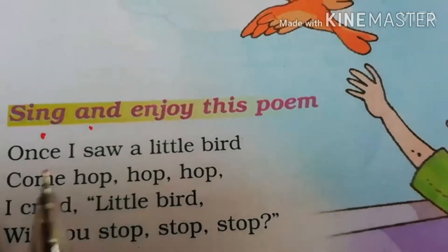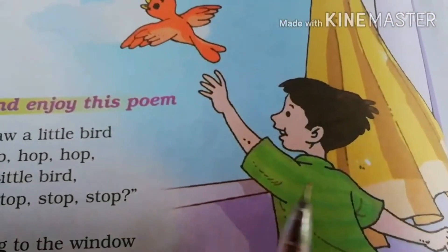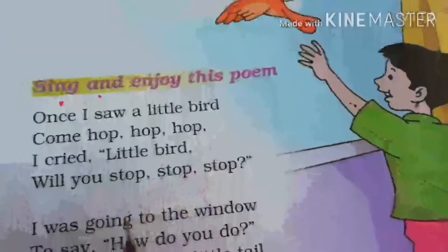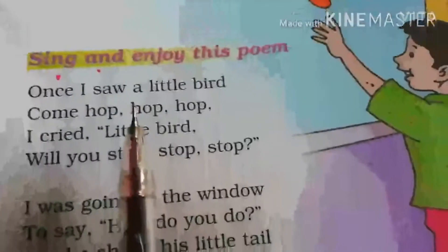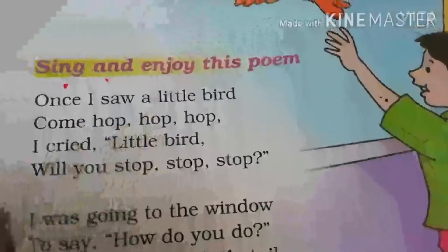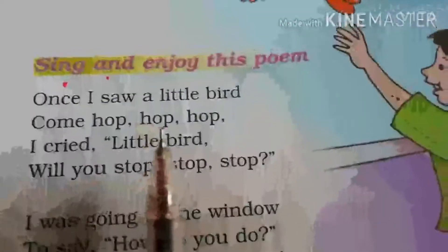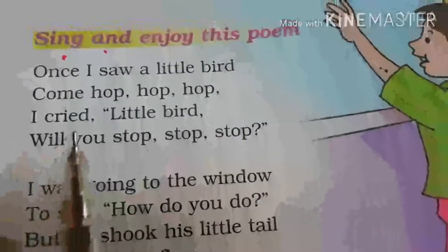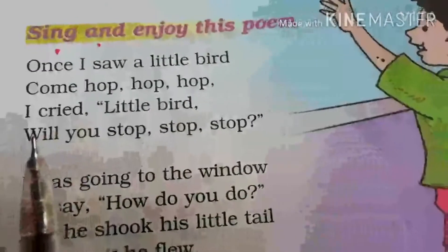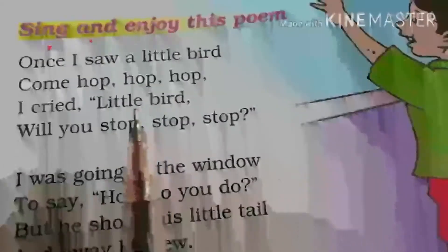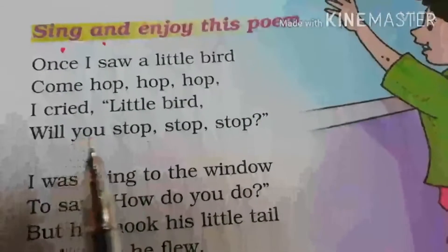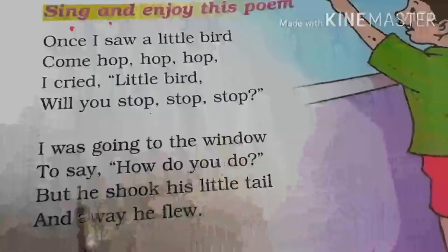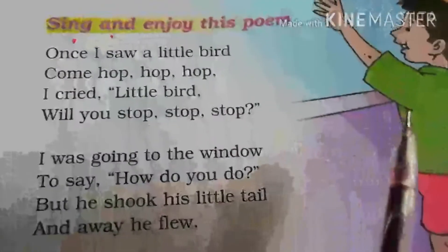Once I saw a little bird — come hop hop hop. So he saw a little bird come. I cried little bird. The child is saying that I was going to the window to say how do you do.